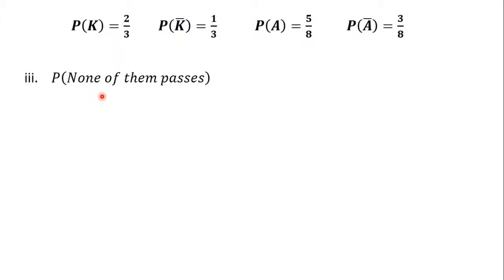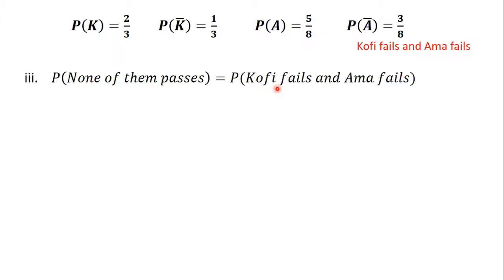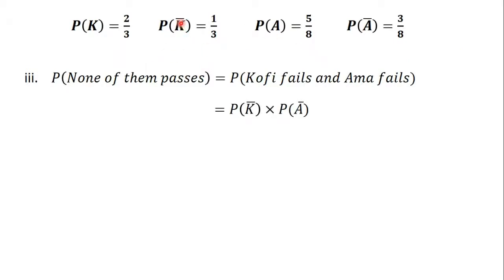We are asked to find the probability that none of them will pass the examination. Kofi and Amma are going to write the examination, and none of them will pass — meaning Kofi will fail and Amma will also fail. So the probability that none of them passes equals the probability that Kofi fails AND the probability that Amma fails. From the multiplication law of probability, where we see 'and' we replace it with multiplication: P(K complement) × P(A complement).